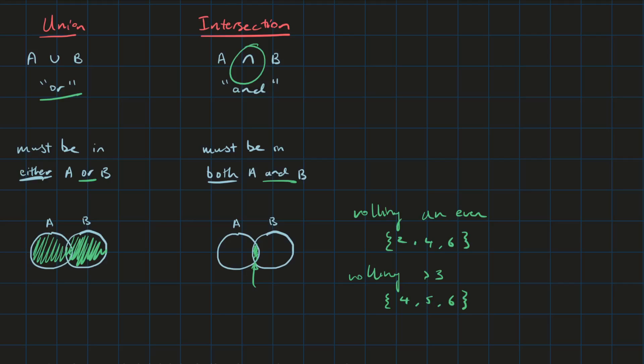So we can see that the intersection of these is just what's common in both. We can just look at the outcomes that are common in both of them. So in this case, it's 4 and 6 because they're in both.